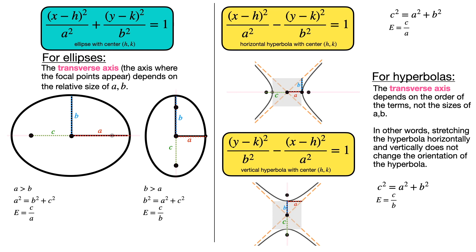For hyperbolas, whether it's horizontal or vertical does not depend on the sizes of a and b but rather on their order. If the x term comes first in the formula then it's going to be a horizontal hyperbola and the transverse axis is horizontal.